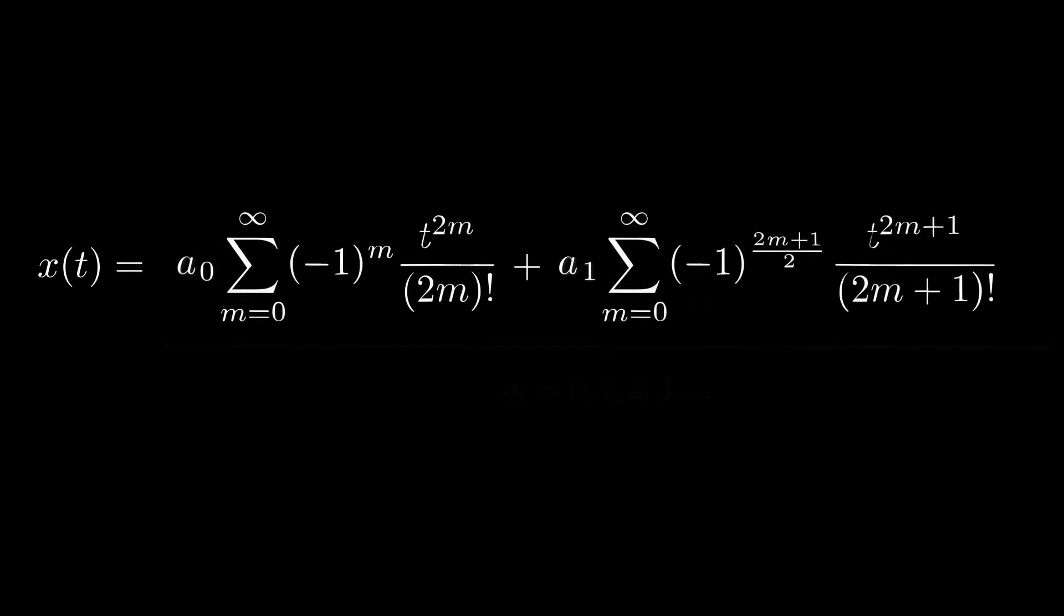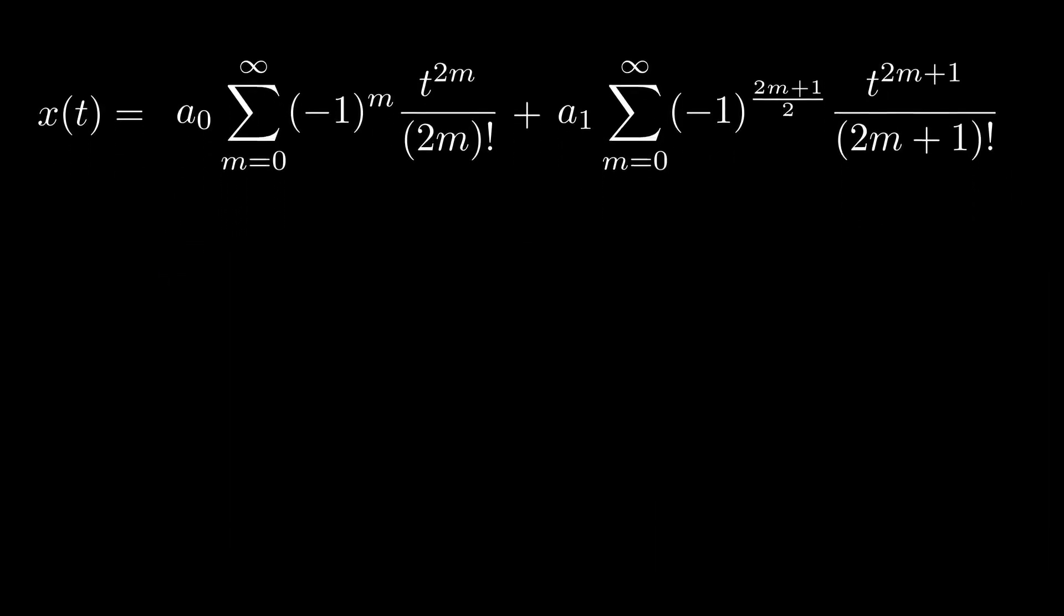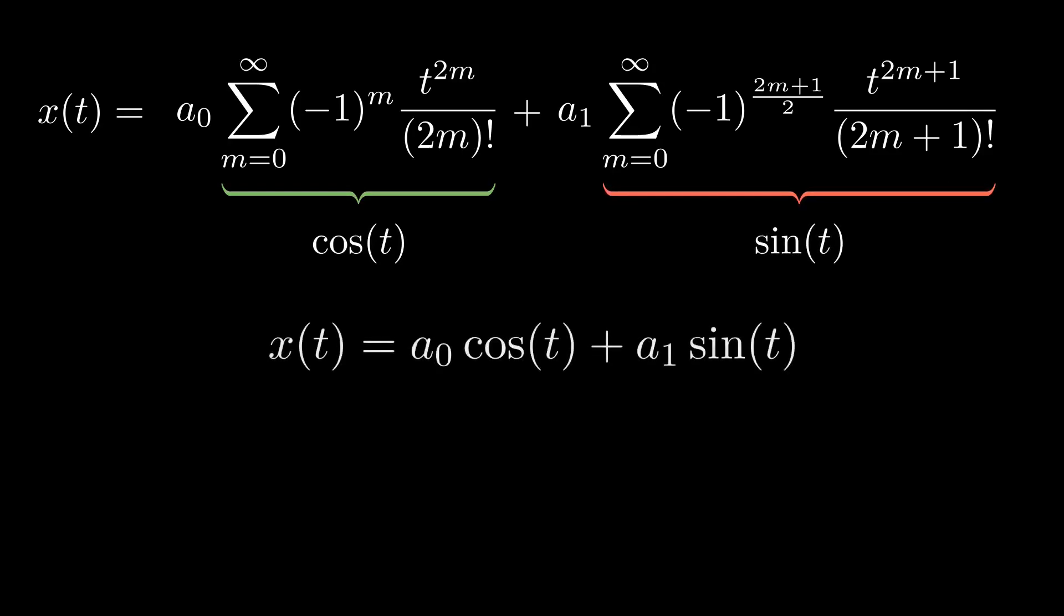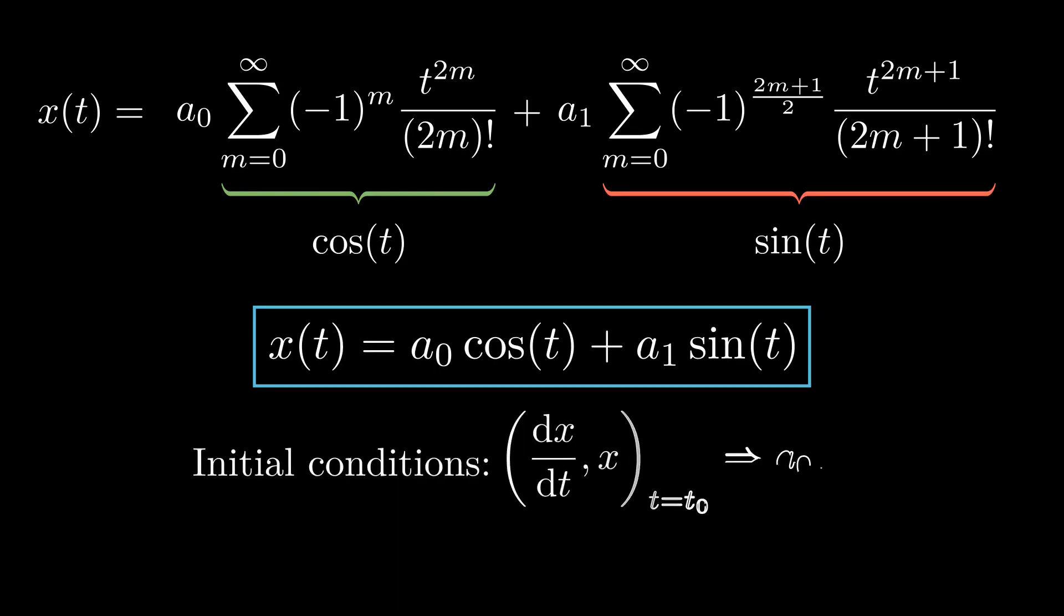Still, it is a very complex looking infinite series. Here, we just need a small observation to simplify it, which is that the first series is the power series of cosine and the second one is of sine. This final form is exactly what we were looking for and again the a0 and a1 are the constants that can be determined by the initial conditions.